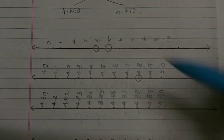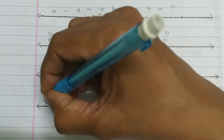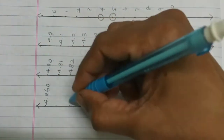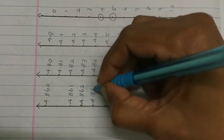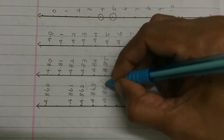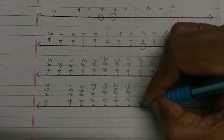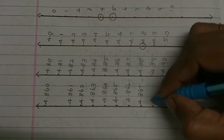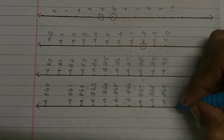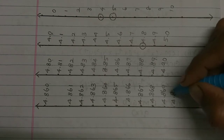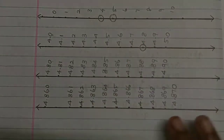Then next, you say 4.860, then 4.870. Between 4.860 and 4.870, we mark: 4.861, 4.862, 4.863, 4.864, then 4.865, 4.866, then 4.867, 4.868, then 4.869, then 4.870. Your point is now written. Now you will mark these points.